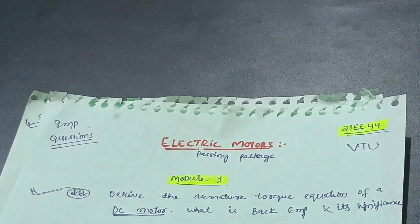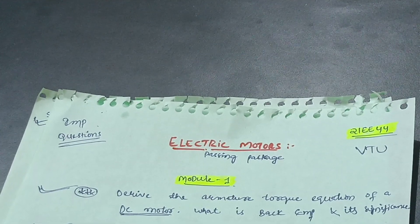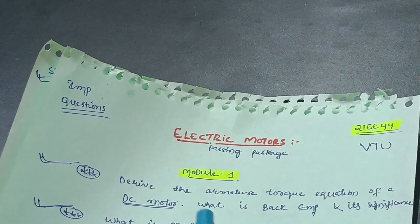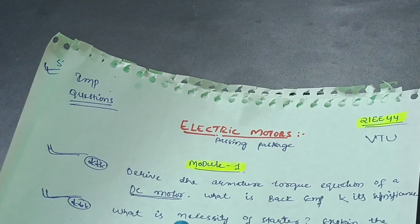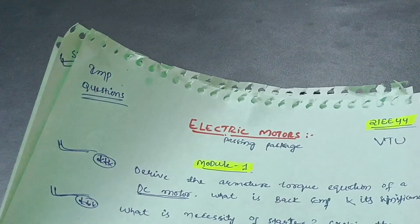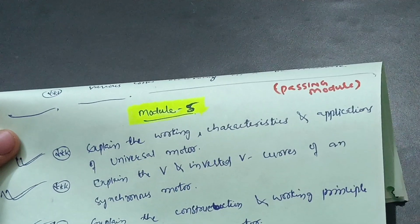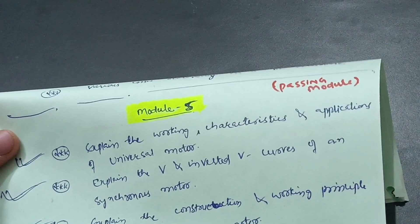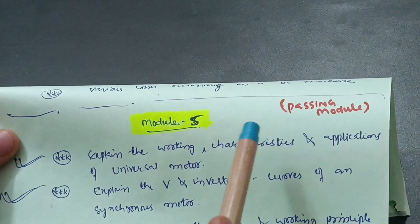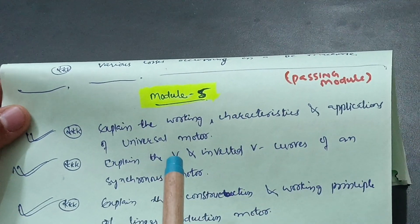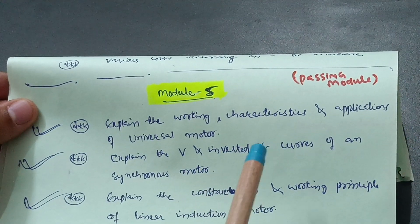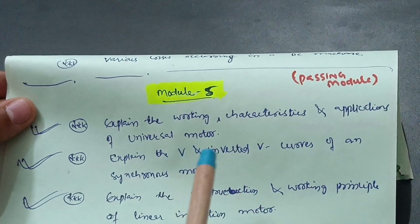Before going to module one, let me tell you there are some passing modules. First, let's discuss those passing modules by which you can easily pass this subject. If you want to score, I can proceed to the rest of the modules. The first passing module is module five, by which you can easily score 20 marks — it is a very easy module with some theory concepts to focus on.